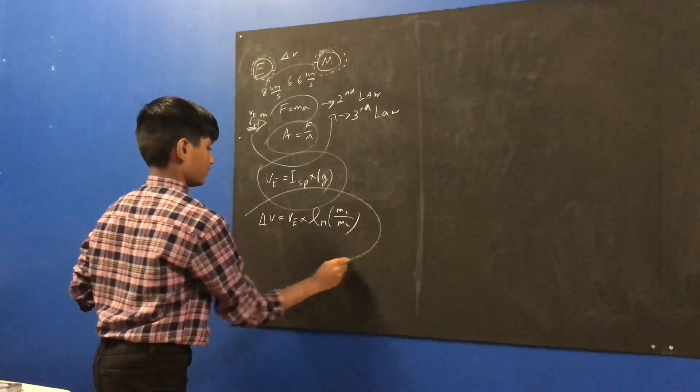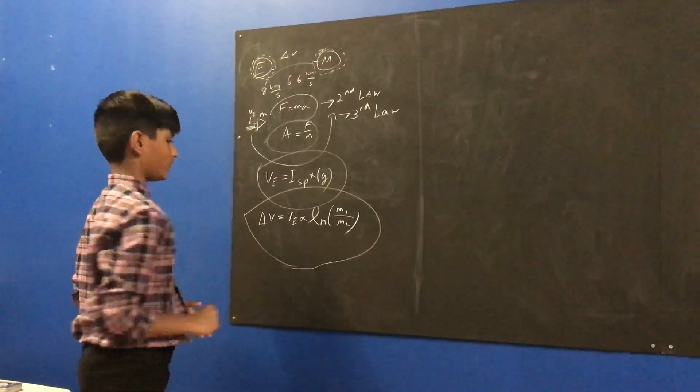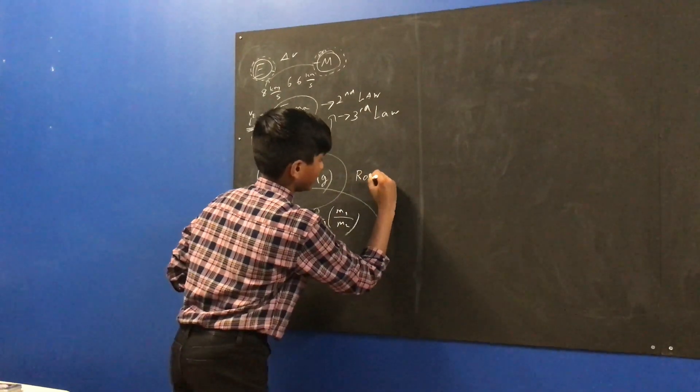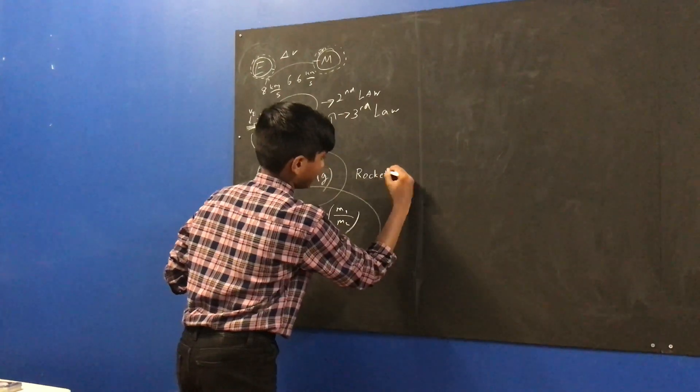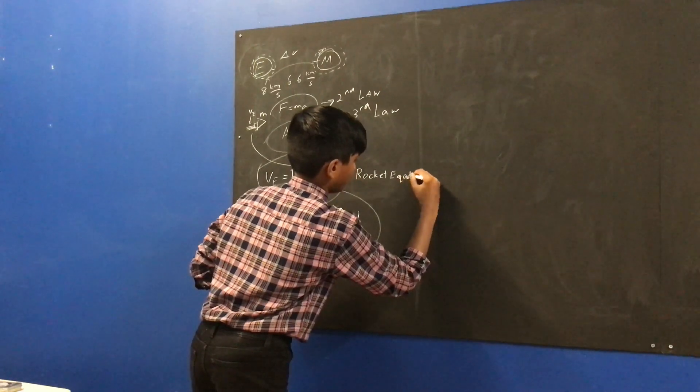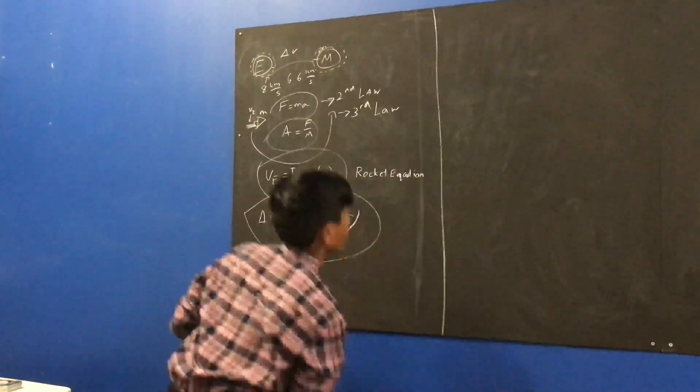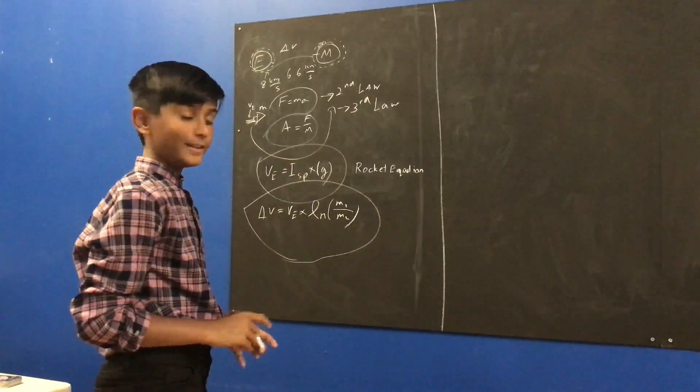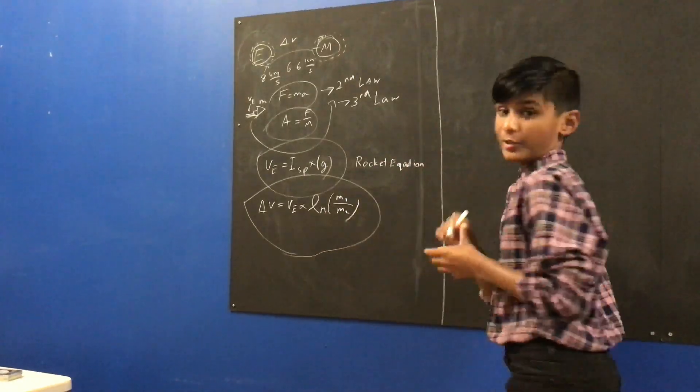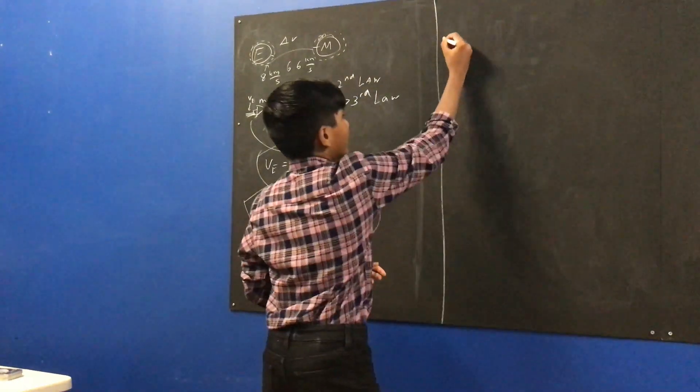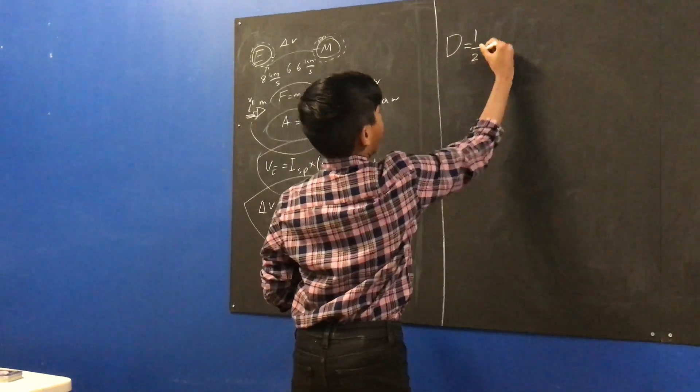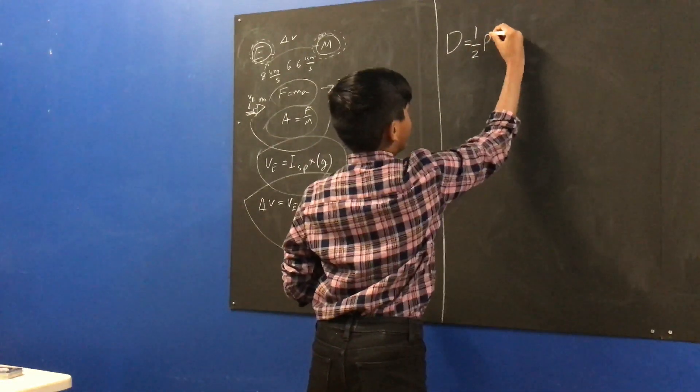Now, this is the rocket equation. Now, this is our first equation. Now, let's move over to our second equation. This equation is called the drag equation.